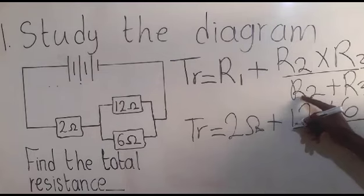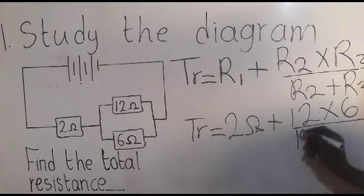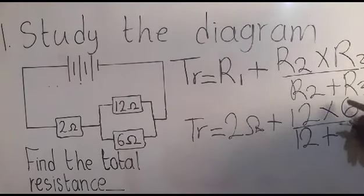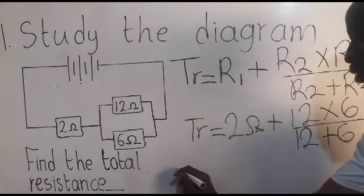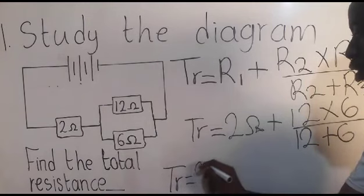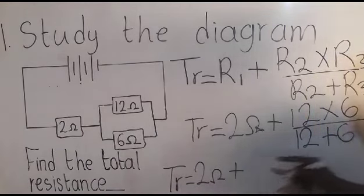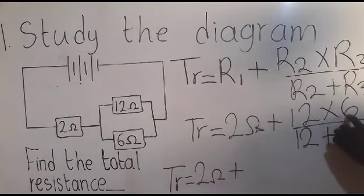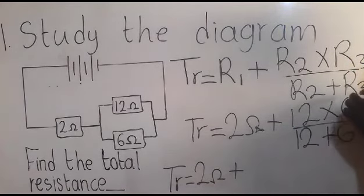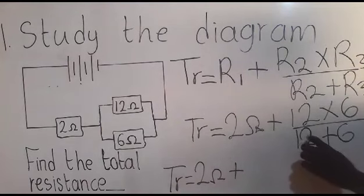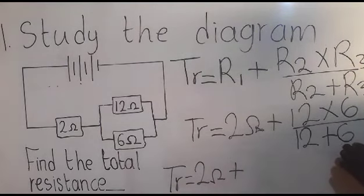Over. So resistor two, we have twelve ohms here. You say plus resistor three, we have six there. So total resistance is equal to two ohms plus. So what is 12 times 6? 72. So on top here we have 72. And what is 12 plus 6? It is 18.